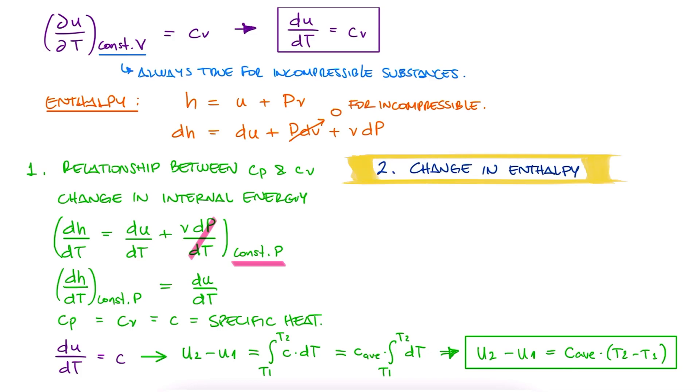To find the change in enthalpy, the second goal with the same expression, we integrate the expression from before, to see that it becomes h2 minus h1 equal to u2 minus u1 plus v times p2 minus p1. The v here comes out of the integral because it is a constant for these incompressible substances.